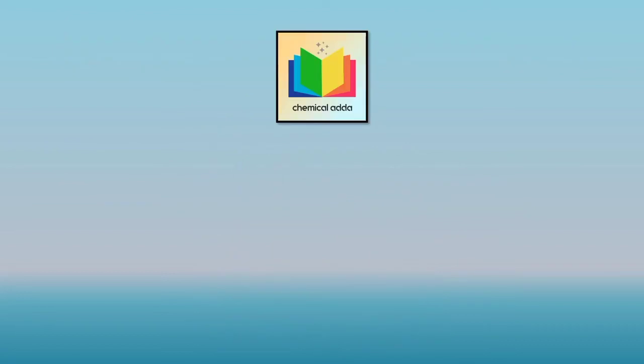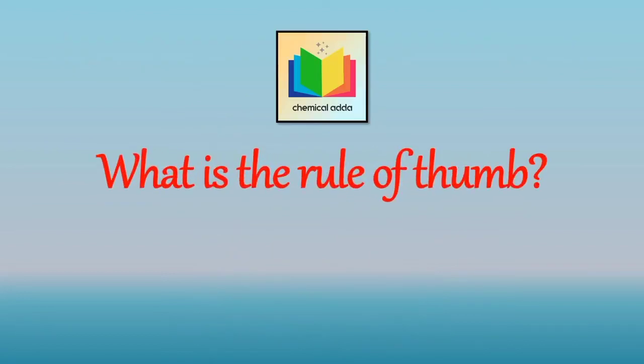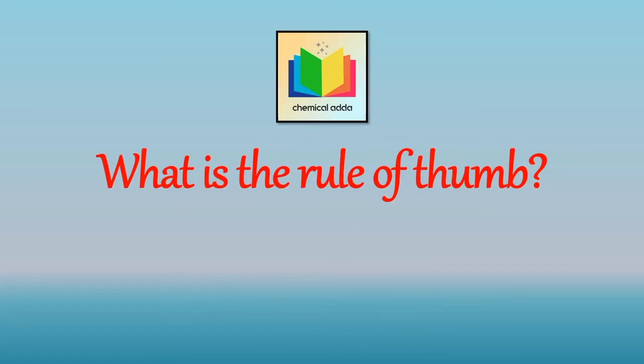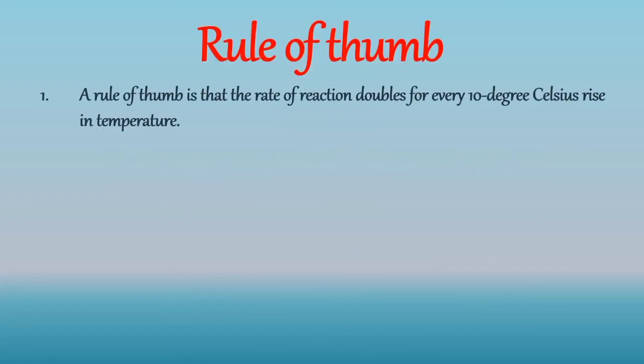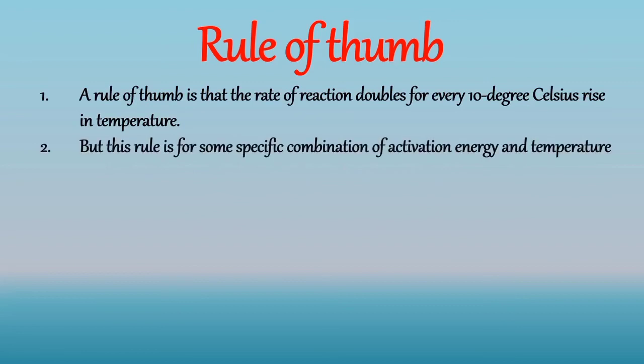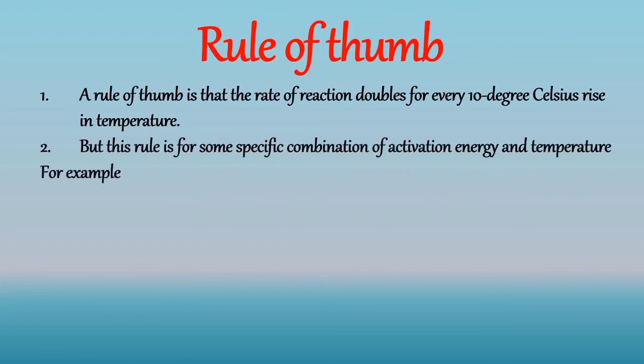Now next question. What is rule of thumb? So a rule of thumb is that the rate of reaction doubles for every 10 degree Celsius rise in temperature. But this rule is for some specific combination of activation energy and temperature. For example, if the activation energy is 147,000 joules per calorie, the rate will double only if the temperature is raised from 500 Kelvin to 510 Kelvin.